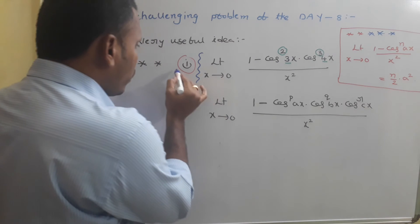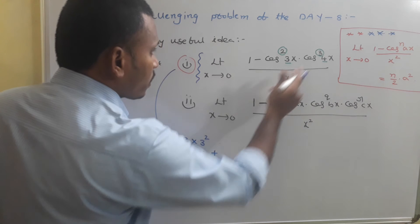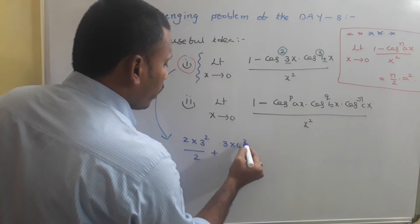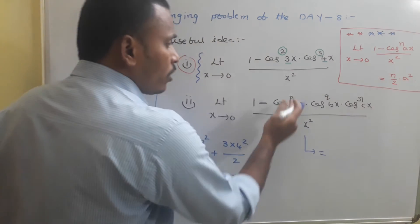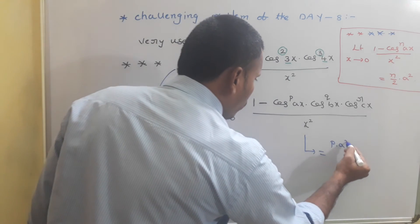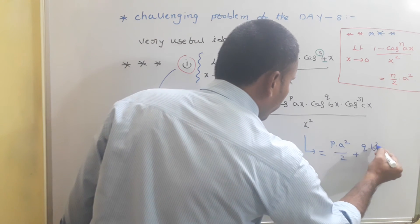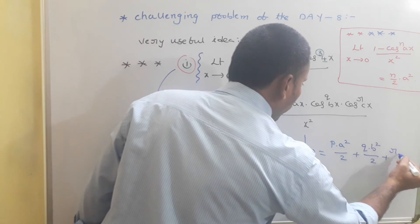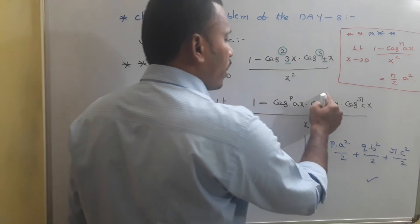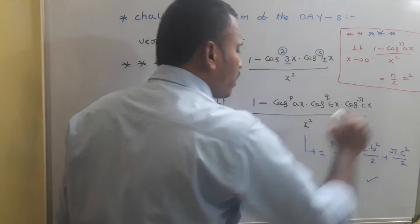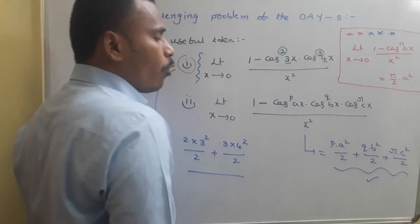So the answer for the first problem is: 2·3²/2 + 3·4²/2. In the same way for the second problem, the answer is: p·a²/2 + q·b²/2 + r·c²/2. This power p, base coefficient a; power q, base coefficient b; power r, base coefficient c.